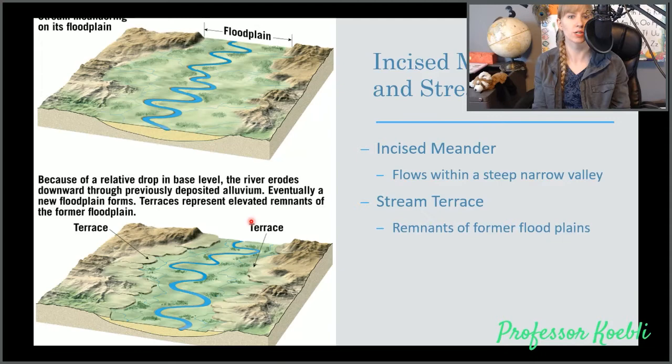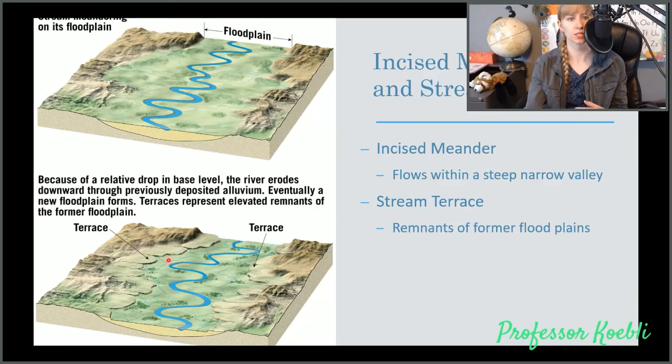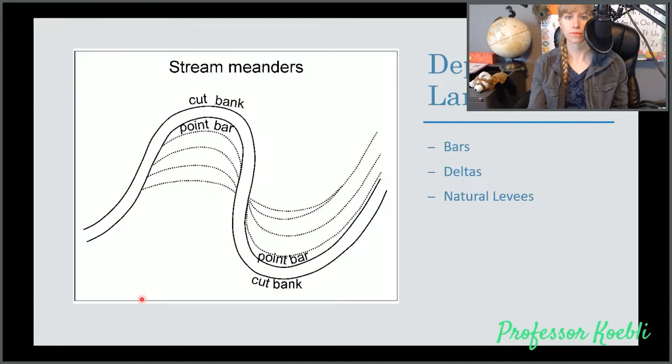An incised meander flows within a deep, narrow valley where stream terraces are remnants of former floodplains. You'll see the terraces. You actually do see the terraces at the Grand Canyon as well.